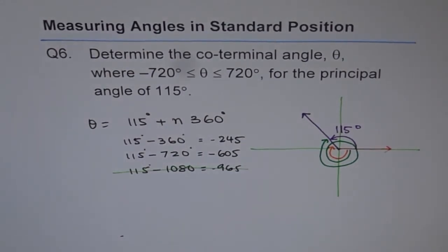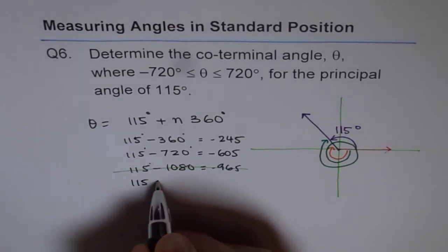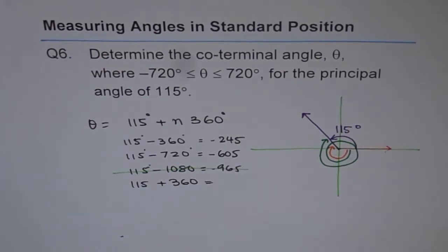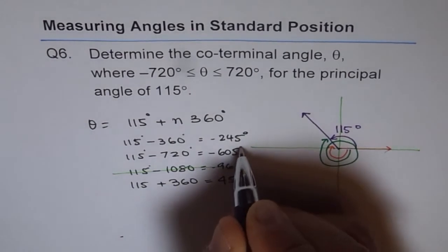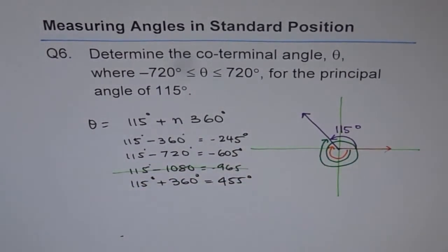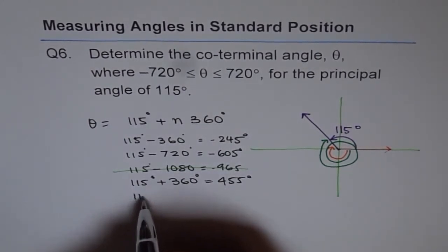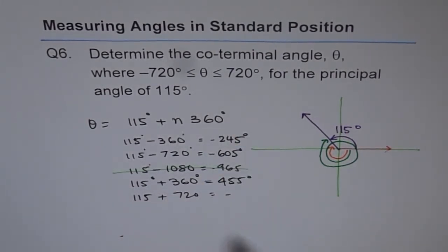Now we can find the others on the positive side. On the positive side, we get 115 plus 360, which equals 475 degrees. All these are in degrees, since angles are measured in degrees and radians. If we try 115 plus 720, of course that would be greater than 720 and outside our domain.